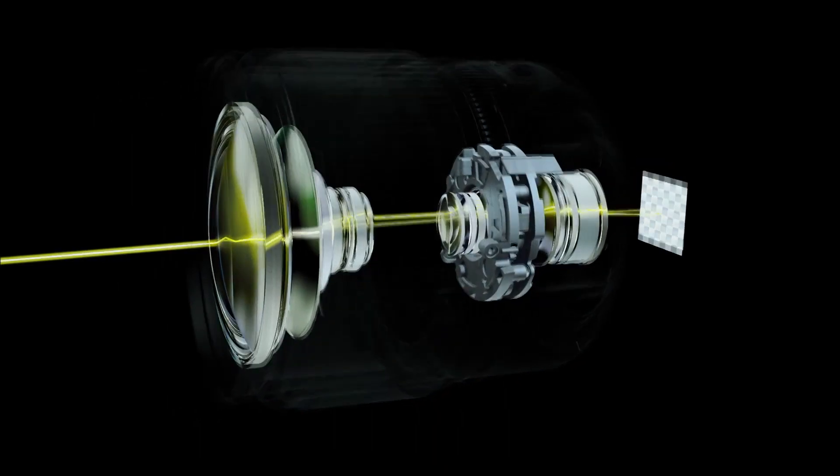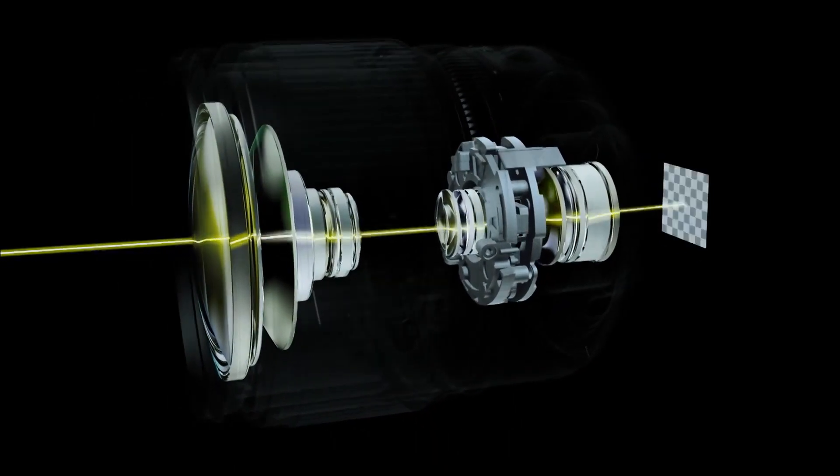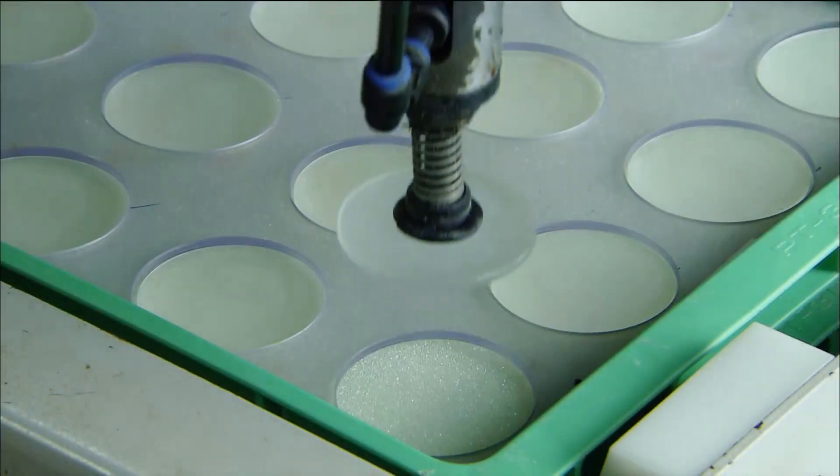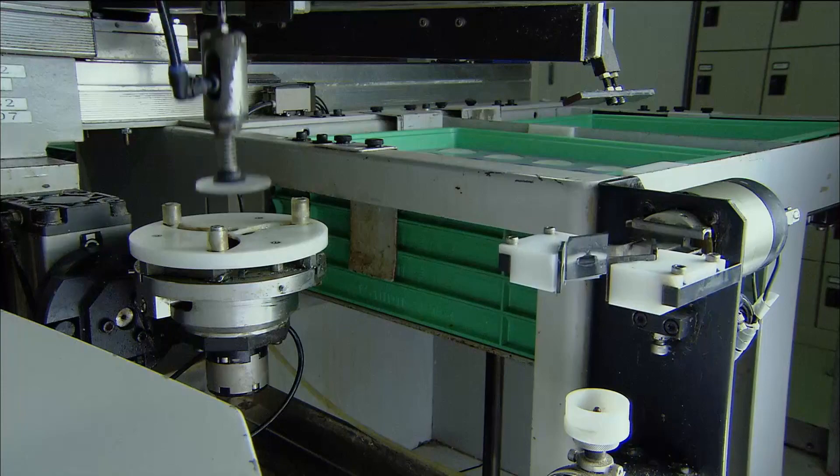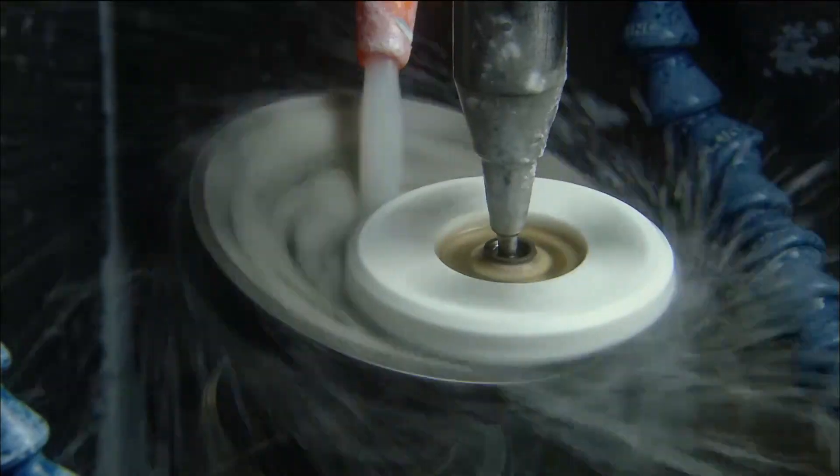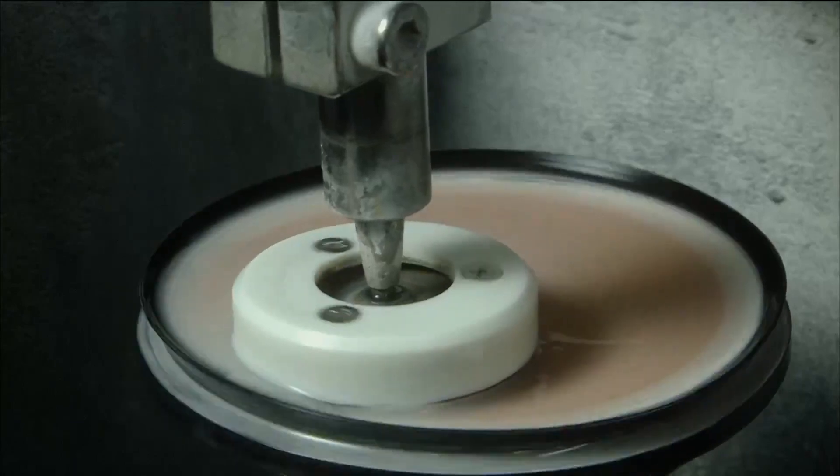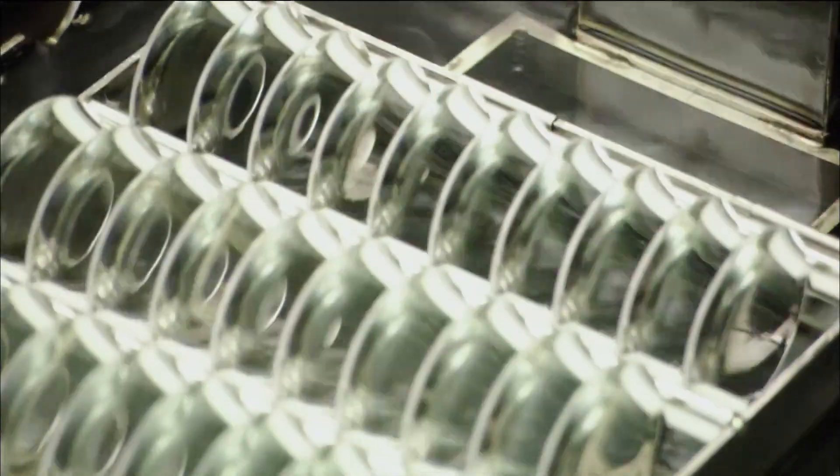Lenses also incorporate the latest technologies such as ultrasonic motors and image stabilization that corrects for camera shake. Lenses are created by polishing glass. Through years of experience, Canon has perfected the polishing process to achieve the highest levels of precision.